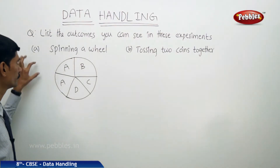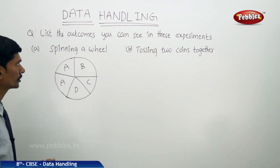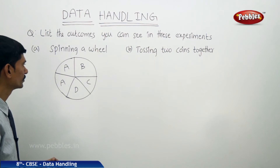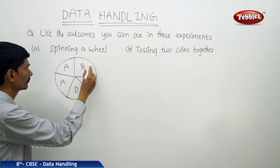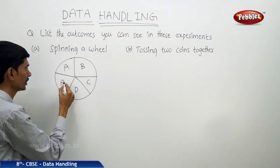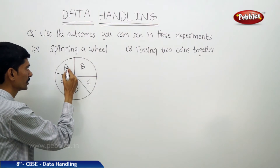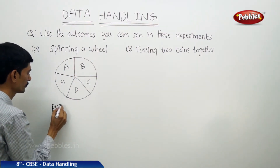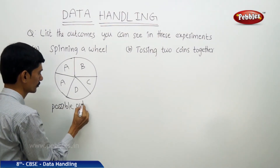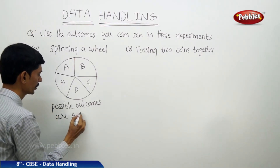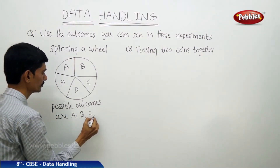Now let us solve some problems. The first question: list the outcomes you can see in these experiments. The first is spinning a wheel — the possible outcomes are A, B, C, and D. Now, tossing two coins together. When you toss a single coin, the possible outcomes are head or tail. But when you toss two coins, here is coin 1 and coin 2.